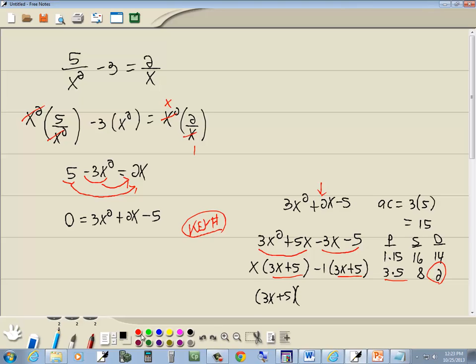So I'll factor out the 3x plus 5. Now to see what goes in your second set of parenthesis, you can now cross out these 3x plus 5s. And what isn't crossed out is what goes right here, which would be x minus 1. So over here, this now becomes 0 is equal to 3x plus 5 times x minus 1.